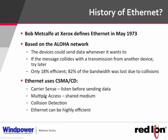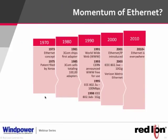Today we don't use CSMA/CD as much because we have full-duplex communication. Looking at the momentum of Ethernet across the decades: Xerox filed the patent in 1975 based on Metcalfe's work. Metcalfe later founded 3Com, which shipped its first Ethernet adapter in 1981, and by 1985 sold 100,000 adapters worldwide. The reason people adopted it so quickly was ubiquity — the same card could be used across different devices like printers and PCs.